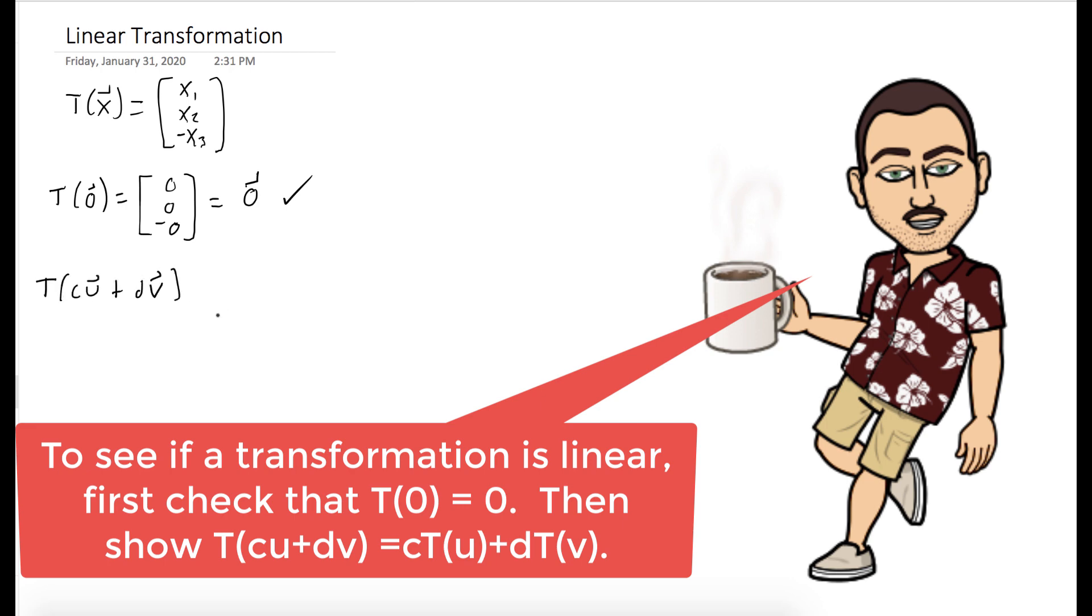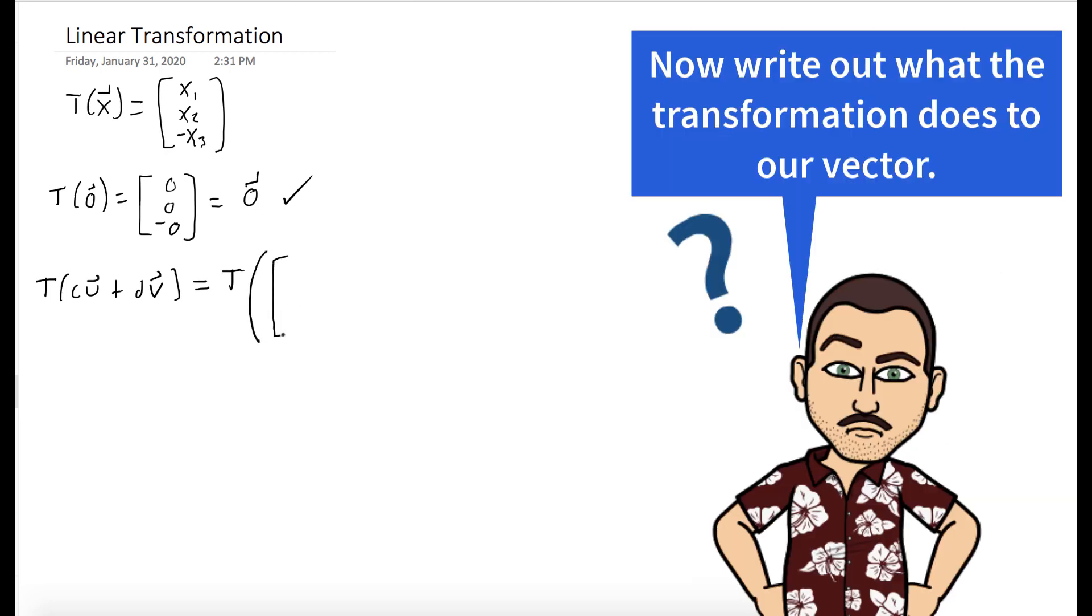And so now let's take a look to see what it does to the vector CU plus DV. Now here, C and D are just some arbitrary scalars, and U and V are arbitrary vectors. So CU plus DV has this expansion. If we evaluate our transformation to it, it keeps the first two entries the same and multiplies negative one to the third entry.